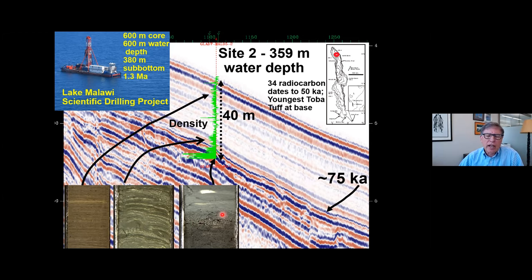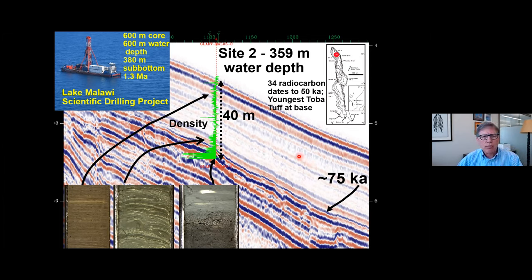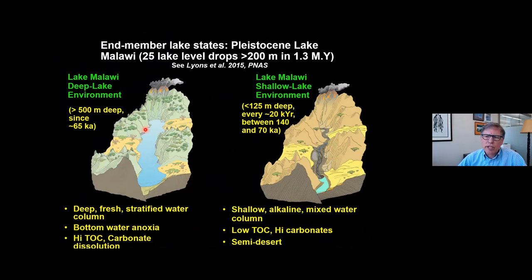This high-amplitude package represents a transgressive carbonate sand sampled in the drill core. What we observe is that this surface or sequence boundary is basically a transgressive surface where the lake shoreline passed by the drill site at about 75,000 years ago, providing evidence for much lower lake levels prior to that time. One of the major results of that drilling work was that in the Pleistocene, Lake Malawi had an extraordinarily variable hydroclimate. We can document more than 25 lake level drops that were more than 200 meters lower at times over the past 1.3 million years.